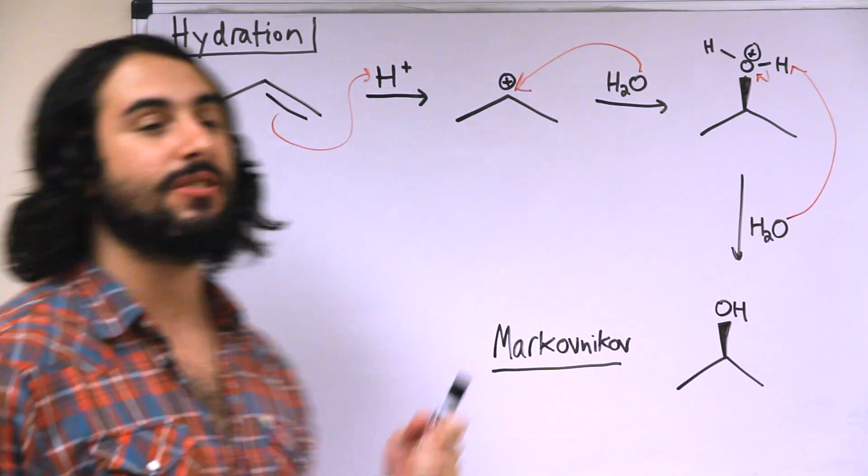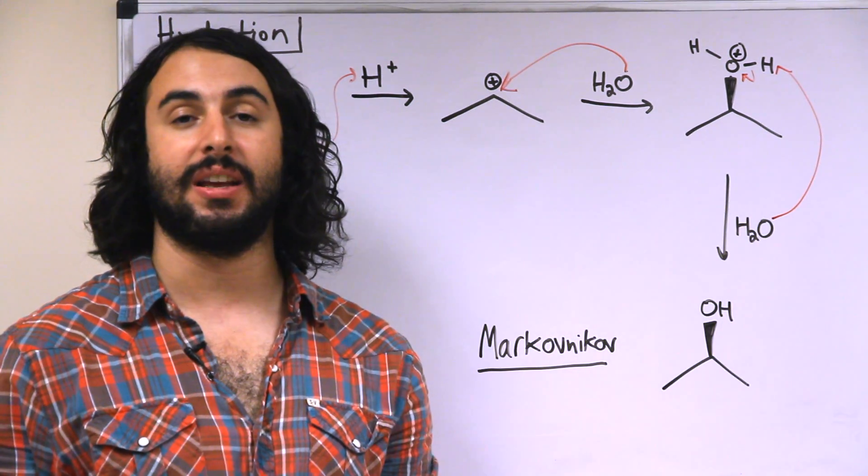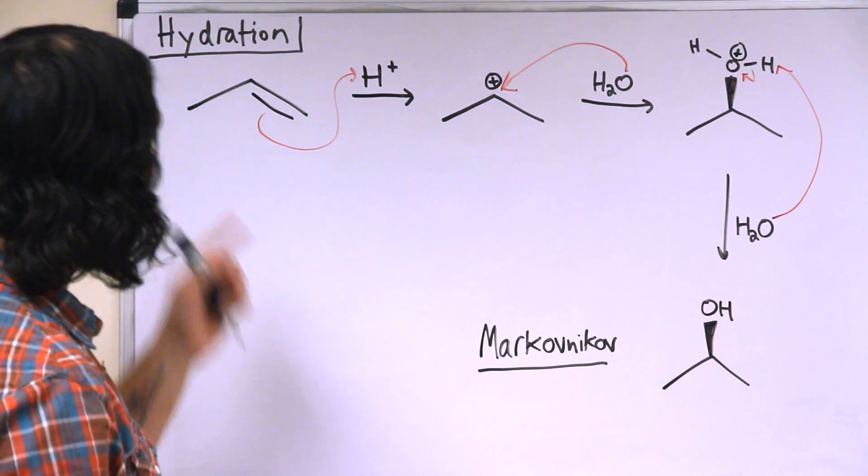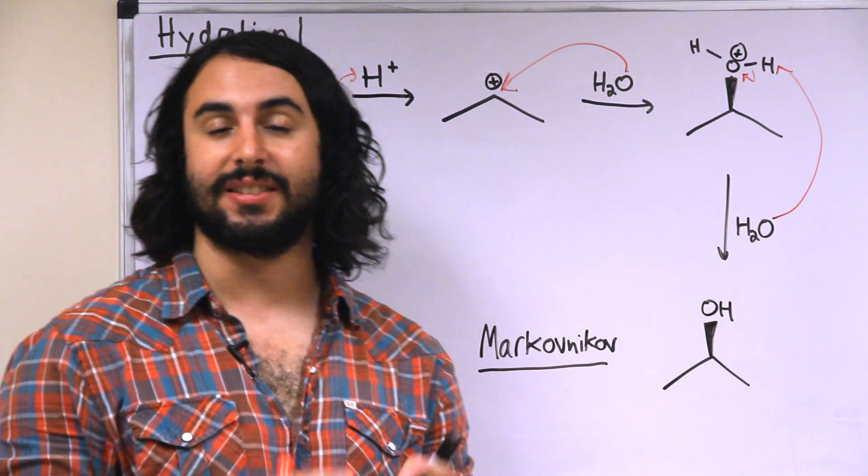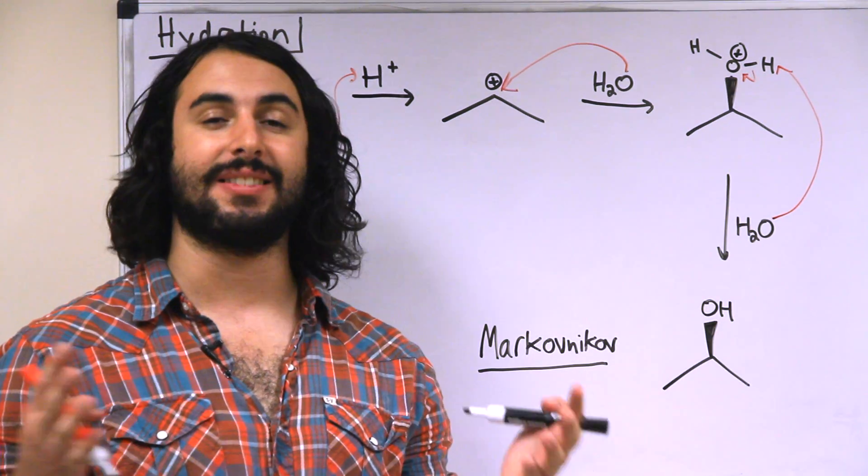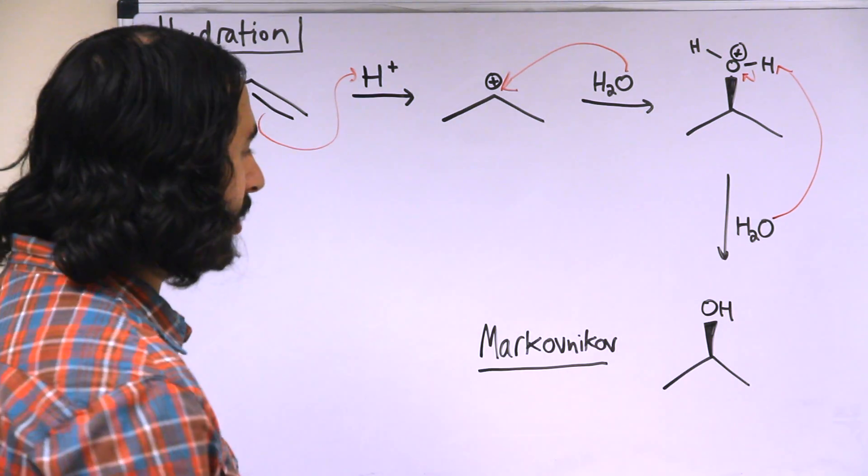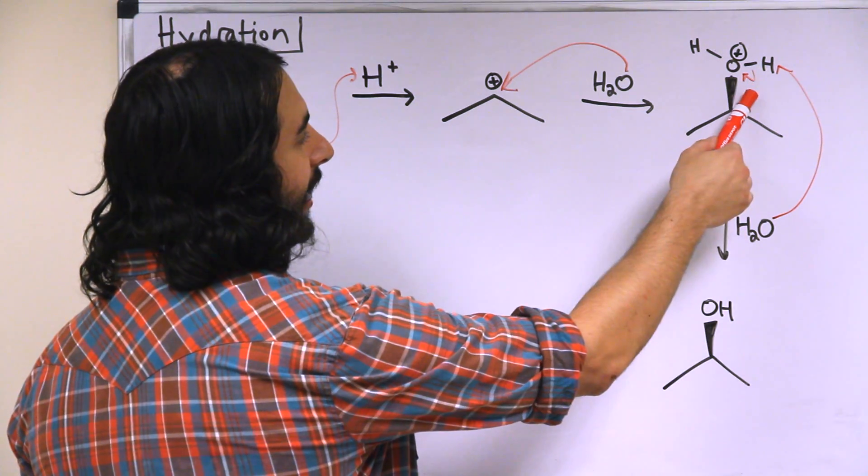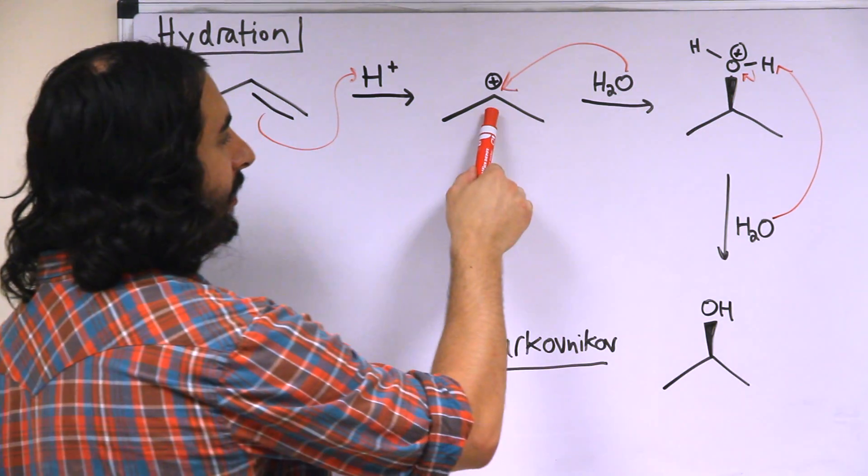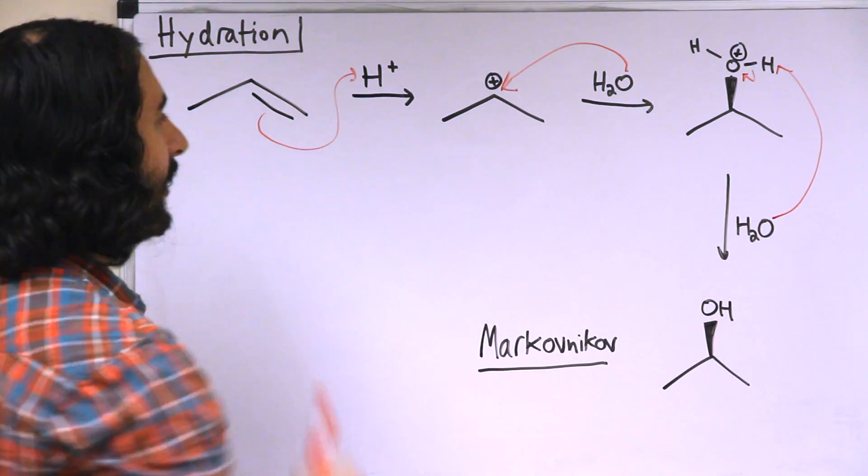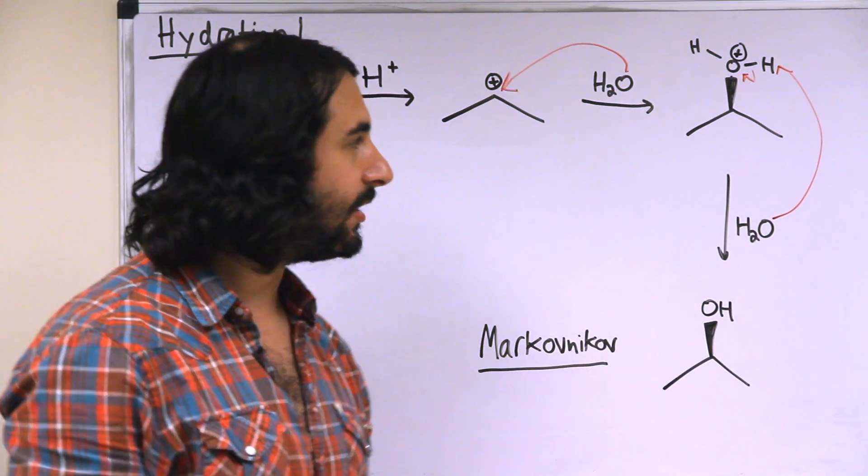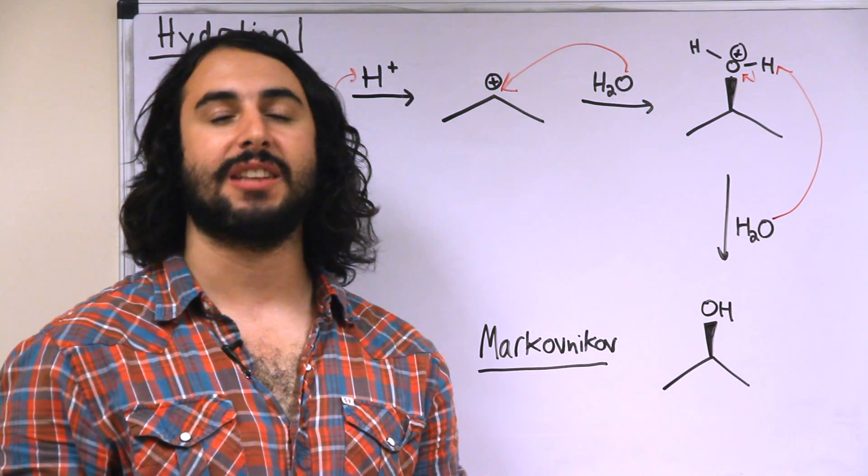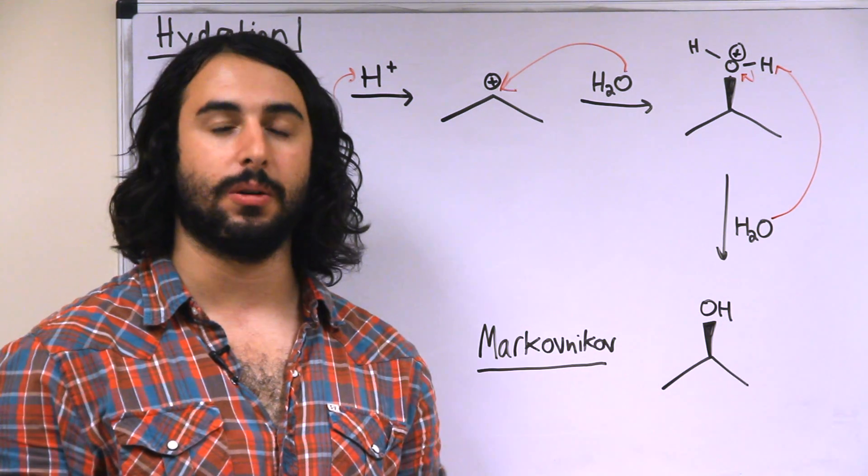Once again we're seeing that the regiospecificity is directed by the differing stabilities of potential carbocation intermediates. What's interesting about acid-catalyzed hydration is it's exactly the opposite of the acid-catalyzed dehydration that we saw during the carbocation rearrangement. We can imagine protonating this oxygen and getting to here, and then water leaving giving us this carbocation, and then an elimination occurring. So we can see that a lot of these mechanisms are reciprocal and related and depend on certain aspects of equilibria to see which way they're being driven.